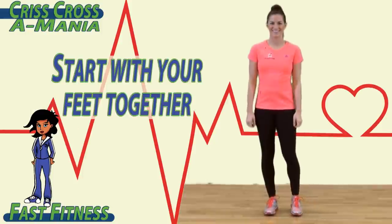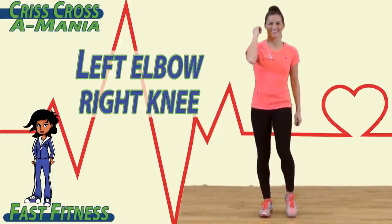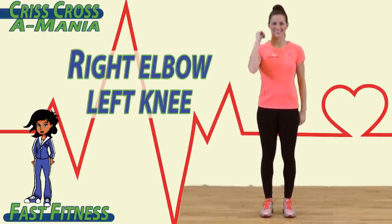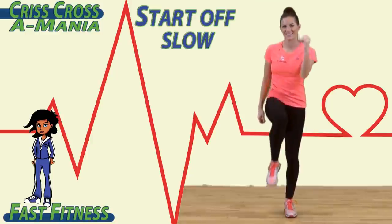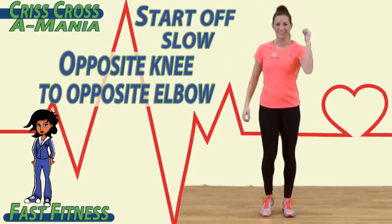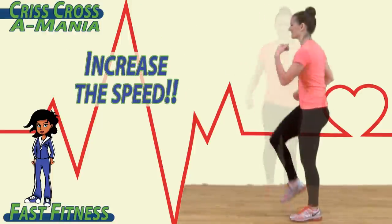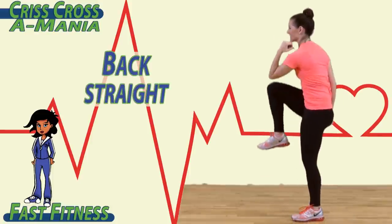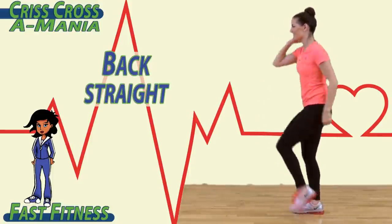To begin, start with your feet together. Catch your left elbow to your right knee, then right elbow to your left knee. Start off slow, touching opposite knee to opposite elbow, and as you feel more comfortable, increase the speed. Try to keep your back straight, lifting your knees up high to touch your opposite elbow.